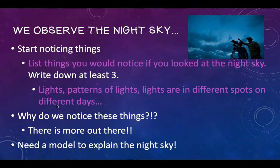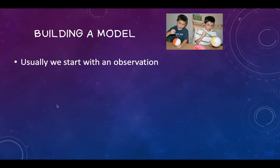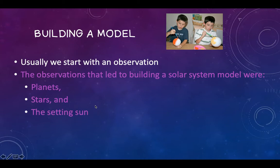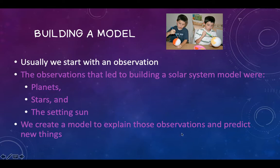A long time ago, people wanted to make a model to explain the night sky. Usually when we build any type of model in science — it could be a physical model or an idea that's explaining something — you start with an observation. The observations that led to building a solar system model were: there are planets that we noticed, there are stars that we noticed, and the way the sun sets each day. We create a model to explain those observations and to predict new things — that's the whole point of models. Explain what we see and predict other things we might see in the future.